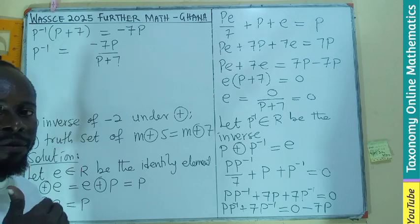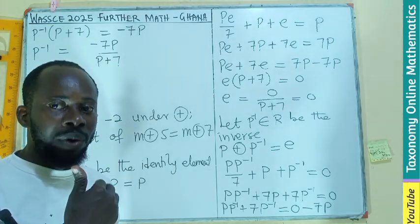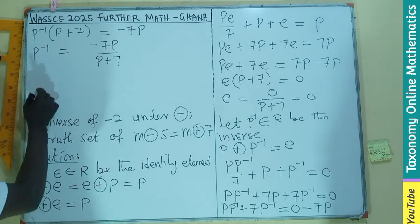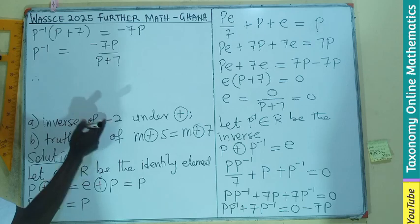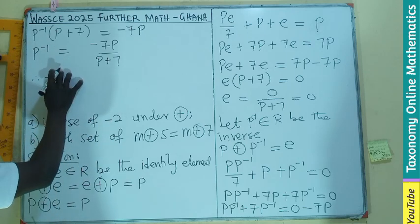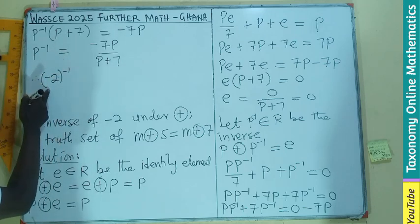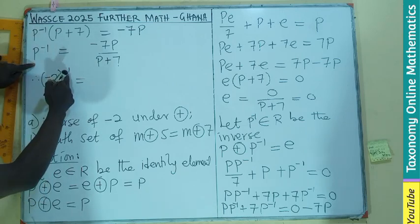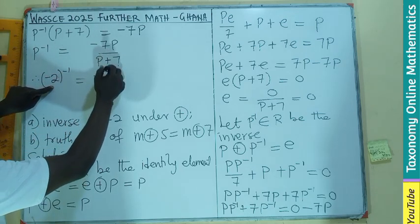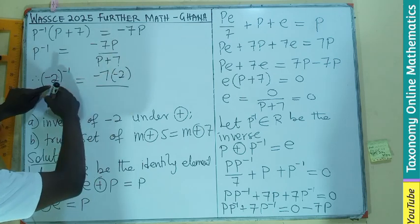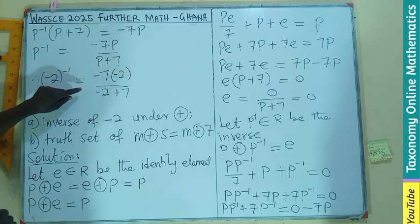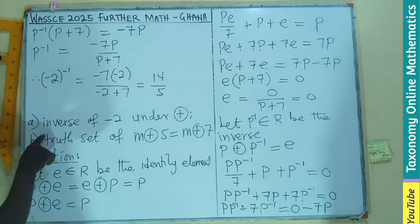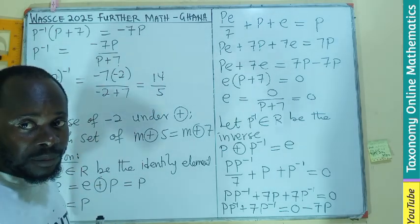So p' = -7p / (p + 7) is the inverse formula. Now we find the inverse of negative 2 by substituting p = -2: inverse of (-2) = -7×(-2) / (-2 + 7) = 14 / 5. So the inverse of negative 2 is 14/5.